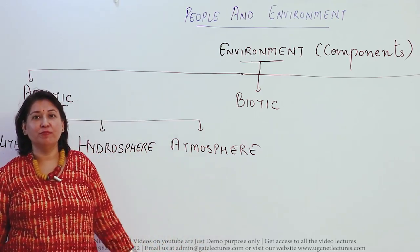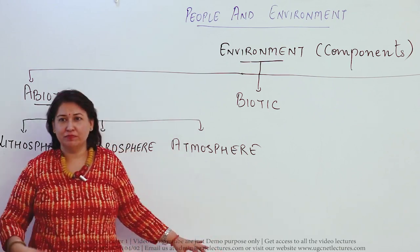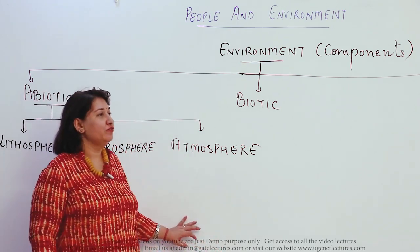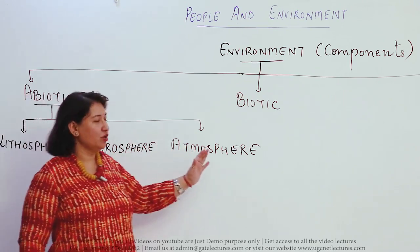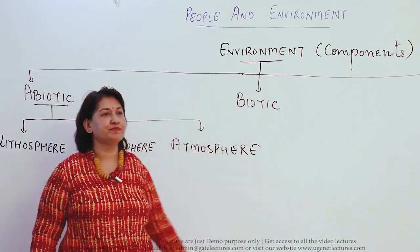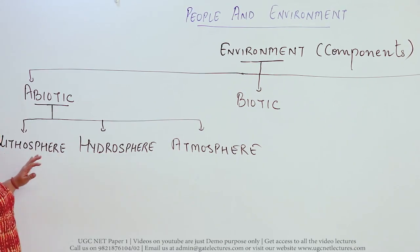Now we are going to talk about the components of environment. Components means the one which makes the environment. We can divide the components into abiotic components, biotic components, and energy. Abiotic means non-living, which are not alive.